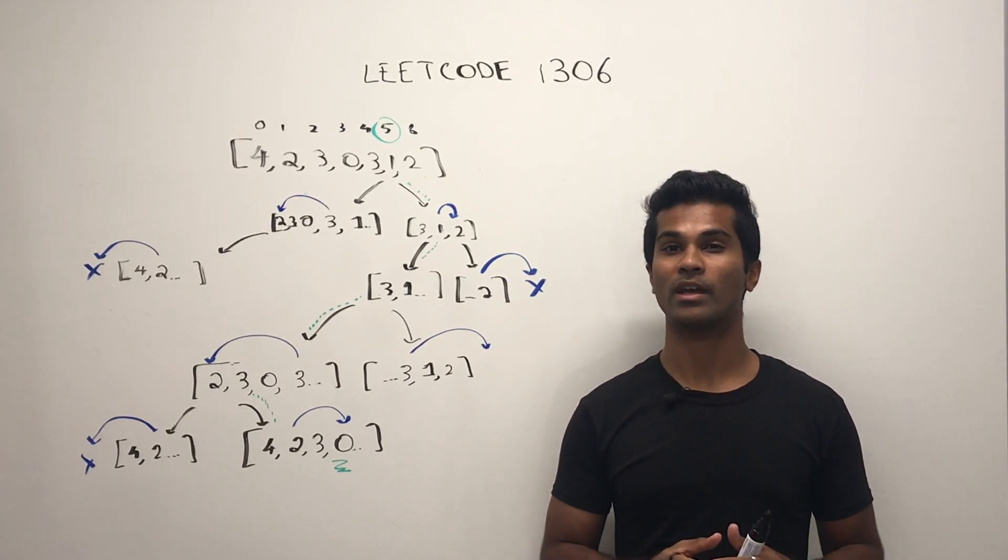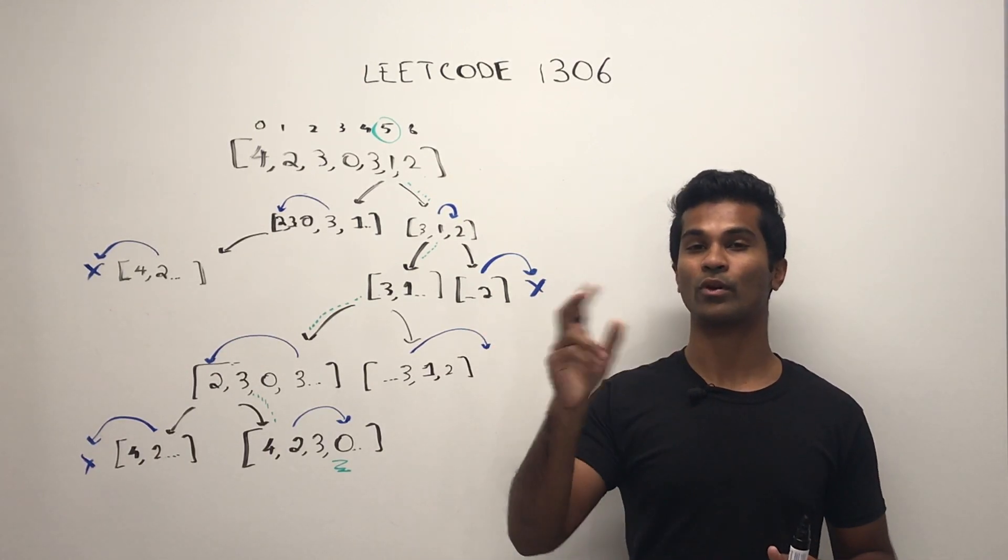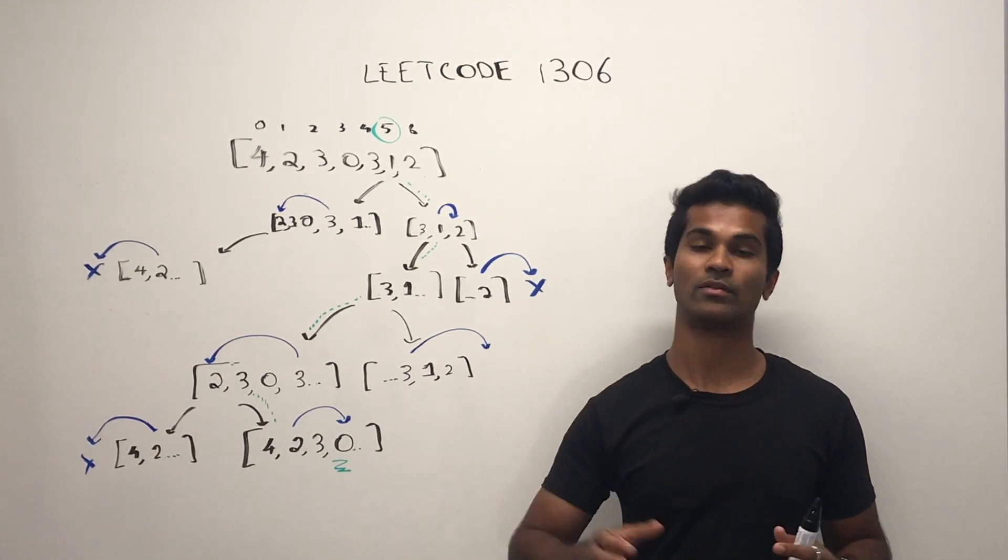Should we still keep searching if we've checked every single spot? And what happens if we're in a cycle? Is it possible where we end up in a cycle where we just go back and forth between two spots or a series of spots?